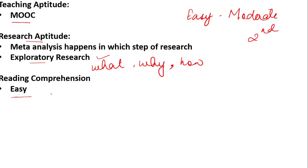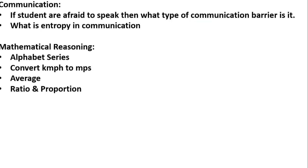Reading comprehension was easy. Students said the questions were direct rather than indirect. If you talk about communication, there was a question: if students are afraid to speak, what type of communication barrier is it? A barrier is an obstacle in communication. In UGC NET, communication barrier topics include psychological barriers, physical barriers, and semantic barriers. When a student is afraid, this emotional factor comes up — so that relates to a specific barrier type. There was also a question on entropy in communication, based on the Shannon-Weaver model, which covers entropy and redundancy.